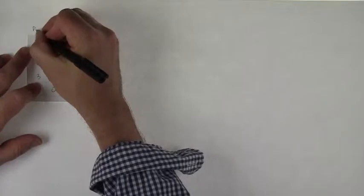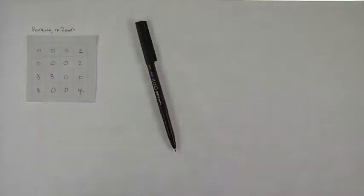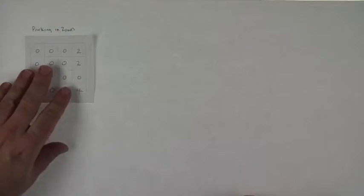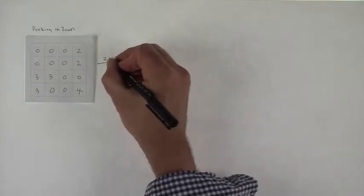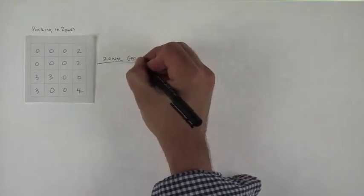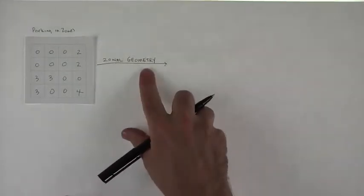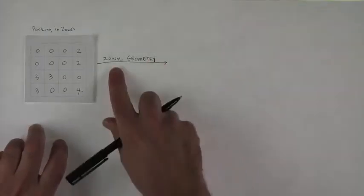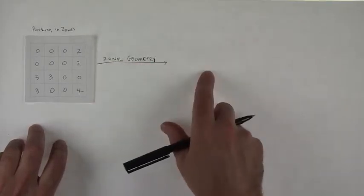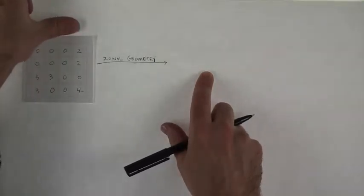This again is our parking in zones layer that we made coming out of raster calculator. We did something where we took that and used an awkwardly named tool called zonal geometry, which could only be named by an engineer. But this tool received the name zonal geometry and it actually makes perfect sense. That's part of what I want to talk about today. It has nothing to do with the fact that we're dealing with parking zones there.